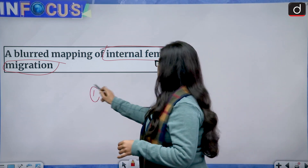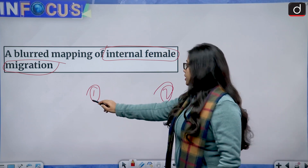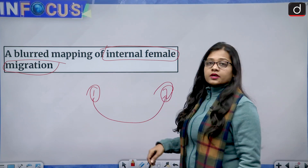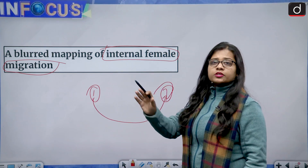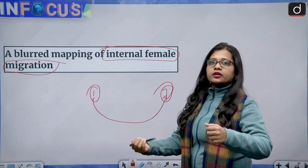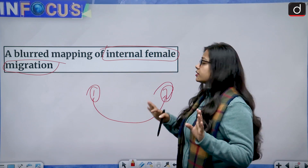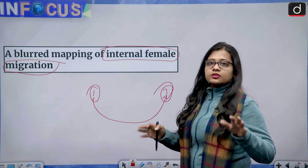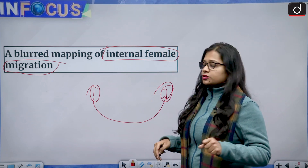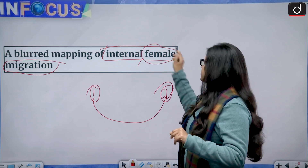Migration means movement from one place to another place. There is a push factor and a pull factor, but we will stick to internal female migration. Female migration means women moving from one place to another place, and internal means within the country. There can be many reasons for migration.